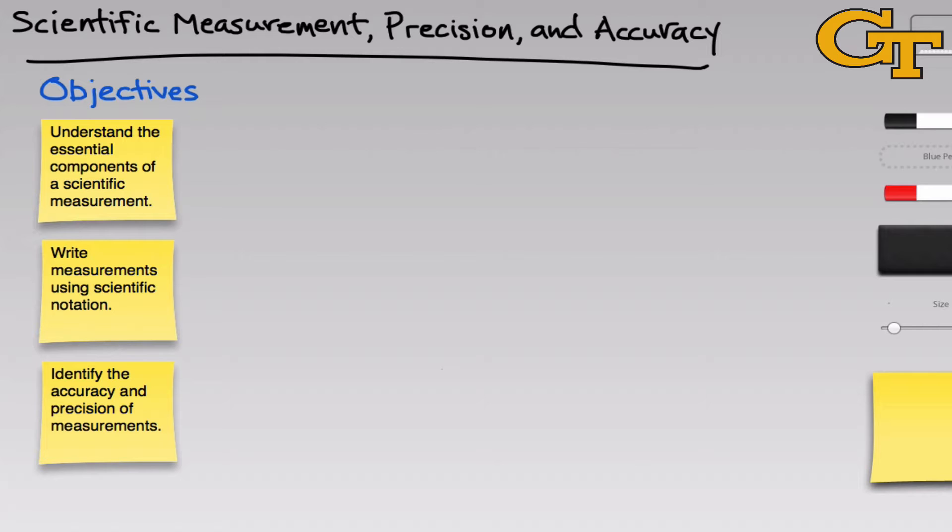The reason this is important is because if you think of scientific theory as a building, scientific measurement is the foundation. It's the foundation on which all scientific theory is based. So we really have to understand how scientific measurements work if we expect to be able to argue scientific theory and understand how scientific theory is constructed from measurements.